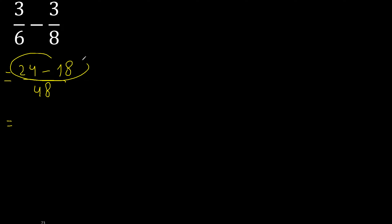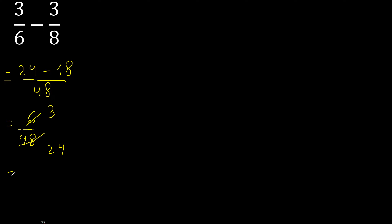6 over 48 can be simplified because it can be divided by the same number. Divided by 2: 6 ÷ 2 = 3, 48 ÷ 2 = 24. Then divided by 3: 3 ÷ 3 = 1, 24 ÷ 3 = 8. Ok, finish it.